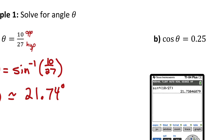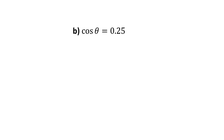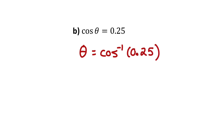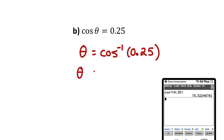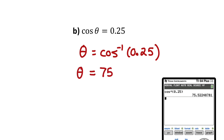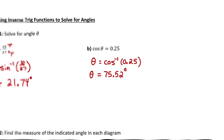Now part B: cosine of some unknown angle is 0.25. There's only one angle in a right angle triangle that could have an adjacent over hypotenuse ratio of 0.25. To find that angle, we use inverse cosine of the ratio 0.25. Using inverse cosine on your calculator, you get the angle to be 75.52 degrees.